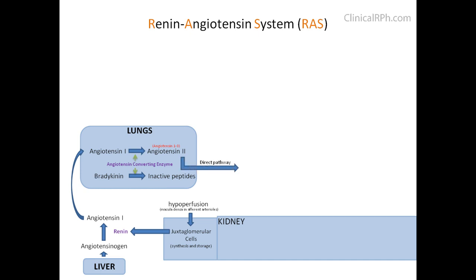There are several pathways by which angiotensin 2 exerts its effect. The direct pathway causes vasoconstriction by binding onto AT1 and AT2 receptors, most prominently via AT1.